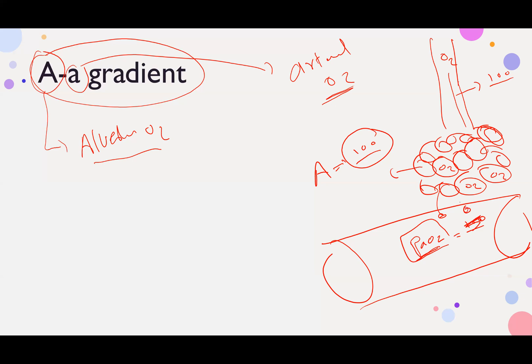What will happen to the A-a gradient? It will be high. It will be 100. We don't have diffusion defect. What will happen? We will say 100 minus 100 equals zero, and the A-a gradient is low.